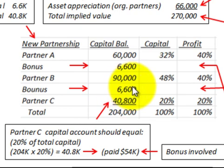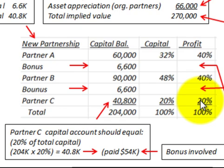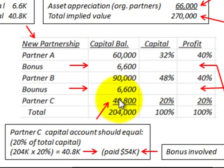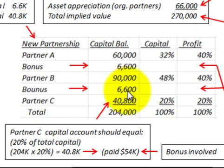Looking at the profit allocation, it was 50/50 before, but since the new partner gets 20%, we divide the remaining 80% equally, so Partner A gets 40% and Partner B gets 40%. Partner C was calculated to receive $40,800 in their capital balance based on the $54,000 investment, with the $13,200 difference going as bonuses split equally between Partner A and Partner B.